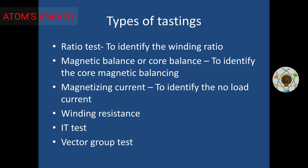Magnetic core balance — this checks whether the core magnetizing is correct or if there is a balancing miss. Magnetizing current is the no-load current. The winding resistance is not much different. We can check the factory report.